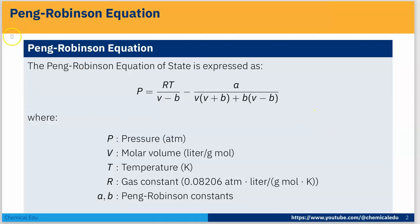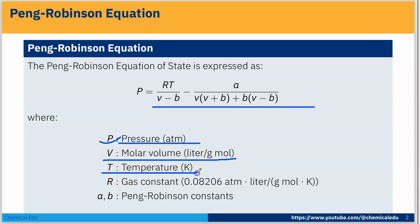Here is the Peng-Robinson equation: P = RT/(V-B) - A/[V(V+B) + B(V-B)], where P is pressure in atm, V is molar volume in liters per gram mole, T is temperature in Kelvin, and R is the universal gas constant (0.08206 atm·liter/gmol·K).